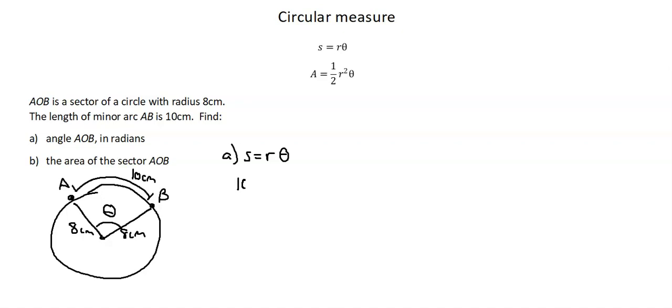We know the length is 10. We know the radius is 8, and we're solving for theta. We divide both sides by 8, and theta is 10 over 8, or 1.25, and this is radians.